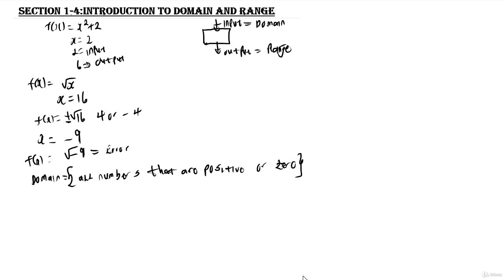What about the range? Like I said earlier, the range is just the output. Just because we can only put positive values into the machine doesn't mean that the range is all positive values — we can also get a negative value as a result. As you can see, the square root of 16 was 4 or minus 4, so we also got an output of minus 4. Therefore the range is going to be all values on the real number line — that is all positive, negative, or 0.